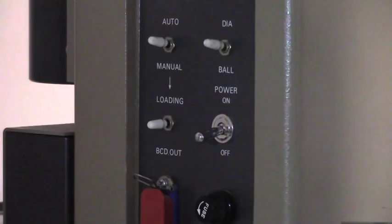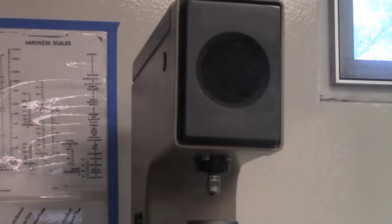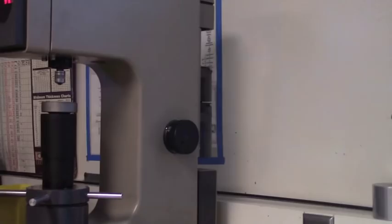The machine output screen should read 100, indicating the machine is ready to run the test. If the output screen reads anything other than 100, toggle the machine's power from off to on. This will reset the machine.